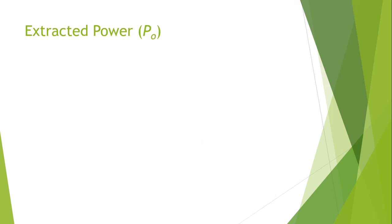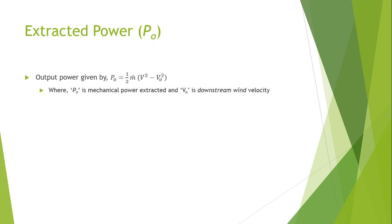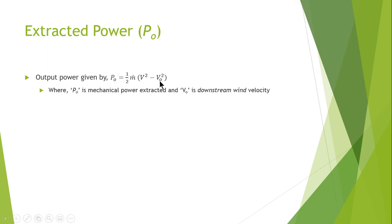Now I will discuss the extracted power. The output power P₀ is given by ½ times the mass flow rate multiplied by (v² − v₀²), where P₀ is the mechanical power extracted and v₀ is the downstream wind velocity. The formula is the same but negates the effect of downstream wind velocity by subtracting v₀² from the actual velocity squared.